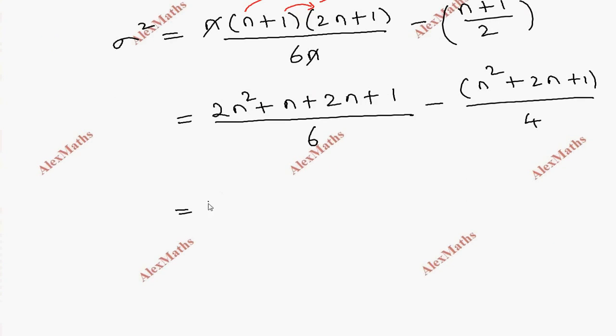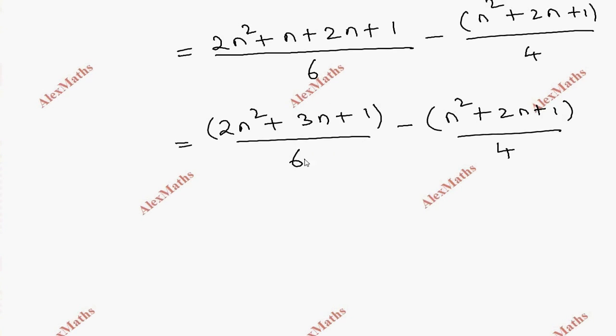Minus n square plus 2n plus 1 whole divided by 4. So this equals 4n square plus 6n plus 2 minus 3n square minus 6n minus 3 whole divided by 12.